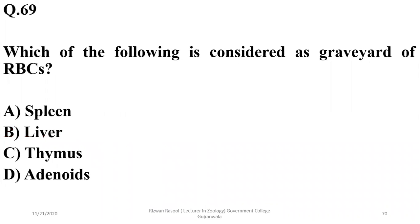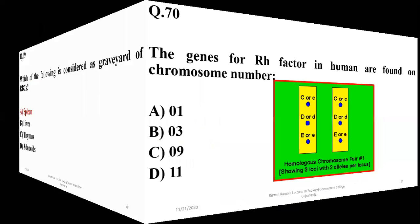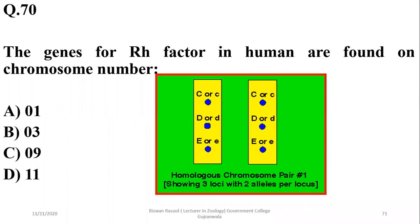Which of the following is considered as the graveyard of red blood cells? It is the spleen, which is the major site for the degradation of red blood cells.